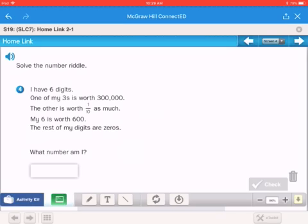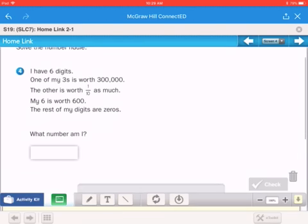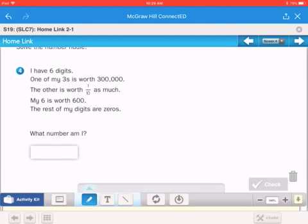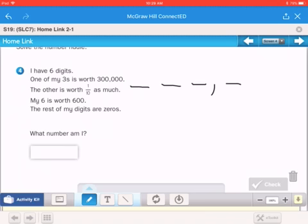Next one. It says, solve the riddle. I have 6 digits. So I'm going to put 6 places, 2, 3, comma for that natural break there. First clue says, I have one of my 3s is worth 300,000. So the 100,000s place is right there.